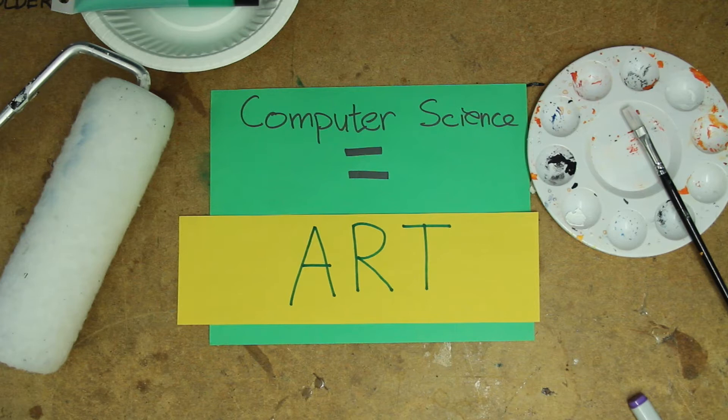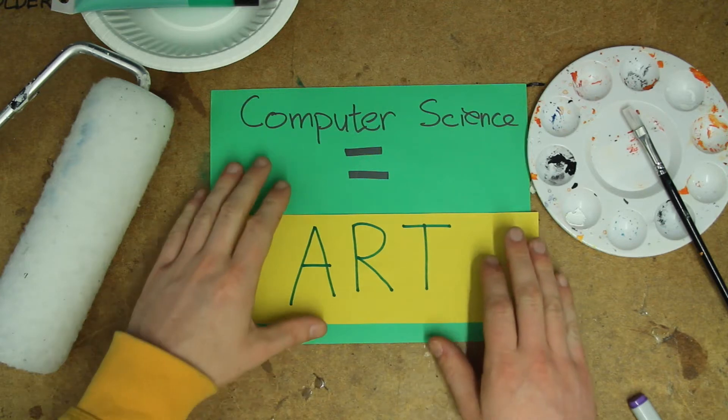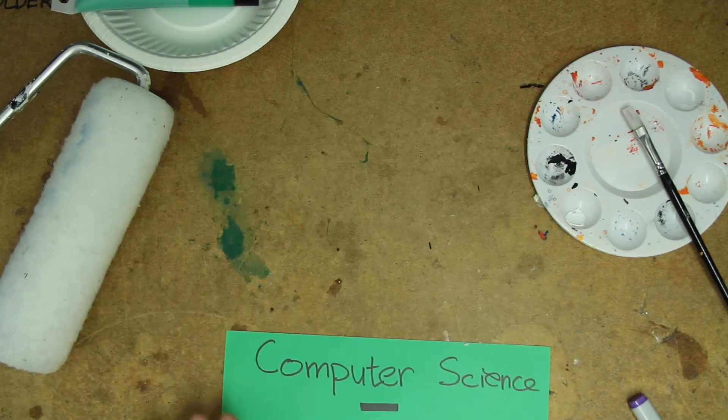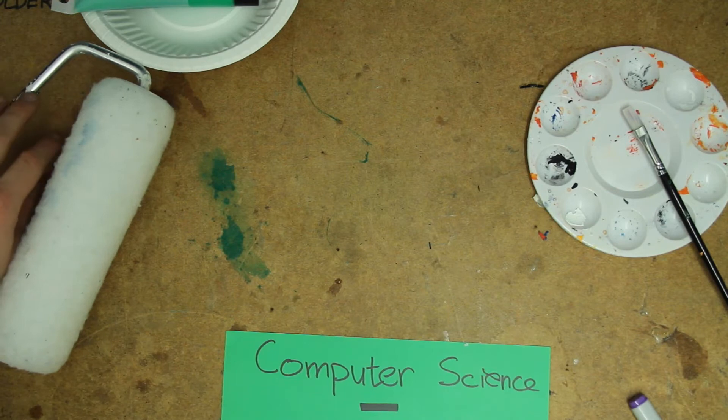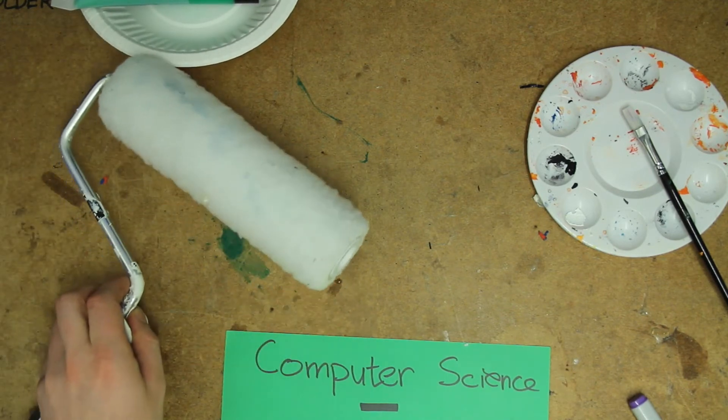When comparing computer science to other fields of art, it is interesting how computer science is extremely focused on efficiency. While with the other arts, like painting, there is a clear distinction between the more efficient version of using paint and the more artistic approach.